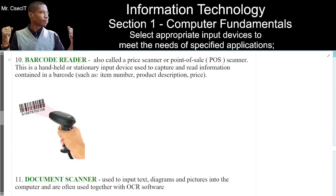Number 10. Barcode Reader. Also called Price Scanner or Point of Sale System POS Scanner. This is a handheld or stationary unit device used to capture and read information contained in a barcode, such as an item number, product description, or price.